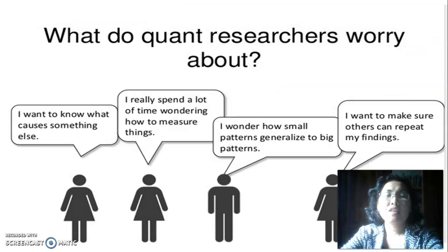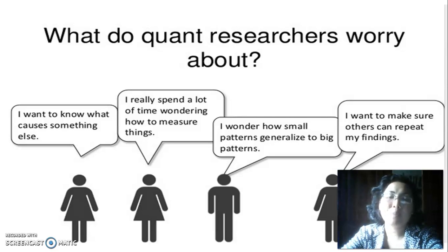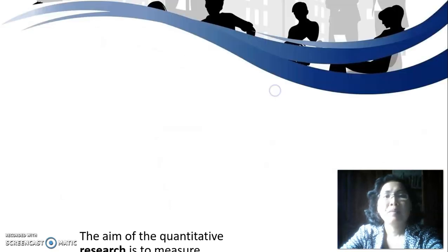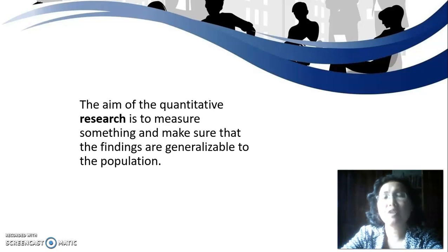Quantitative researchers worry about: I want to know what causes something else. I really spend a lot of time wondering how to measure things. I wonder how small patterns generalize to big patterns. I want to make sure others can repeat my findings. The aim of quantitative research is to measure something and make sure that the findings are generalizable to the population.